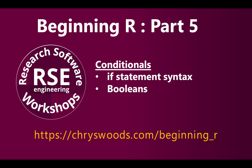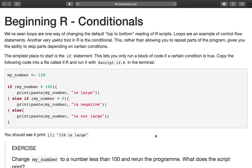Hello, I'm Christopher, a Research Software Engineer with Research Software Workshops, and it's a very warm welcome to part 5 of Beginning R. The material is at chriswoods.com/beginning-R, and we're now working through the conditionals page. We saw that loops were one way of changing the default top-to-bottom reading of R scripts. Loops are an example of control flow statements, and another very useful control flow statement is the conditional.